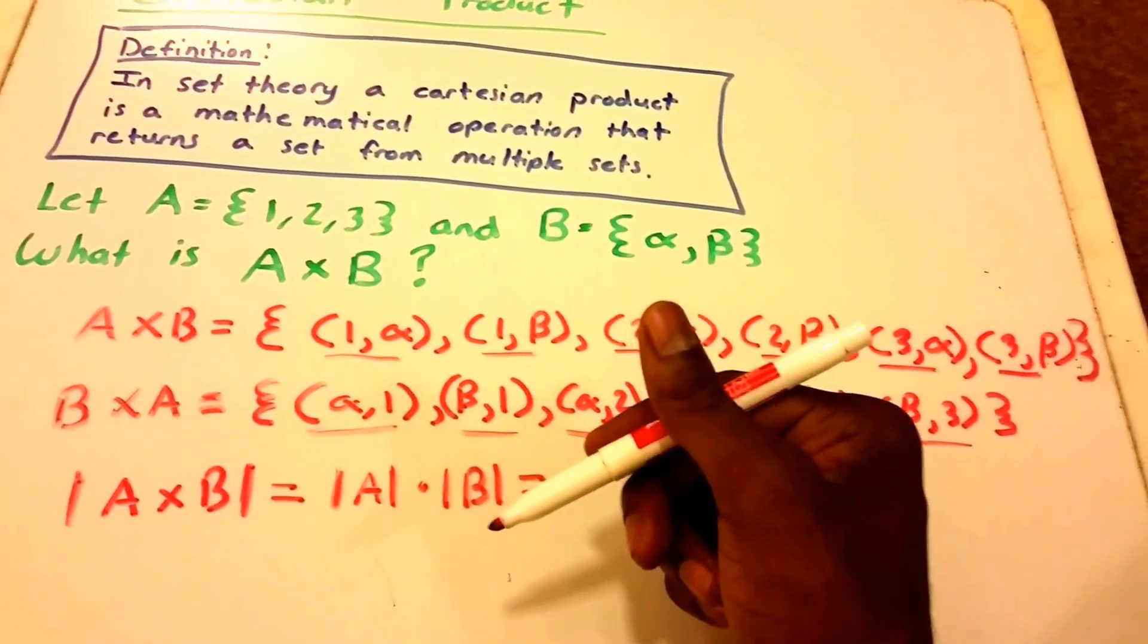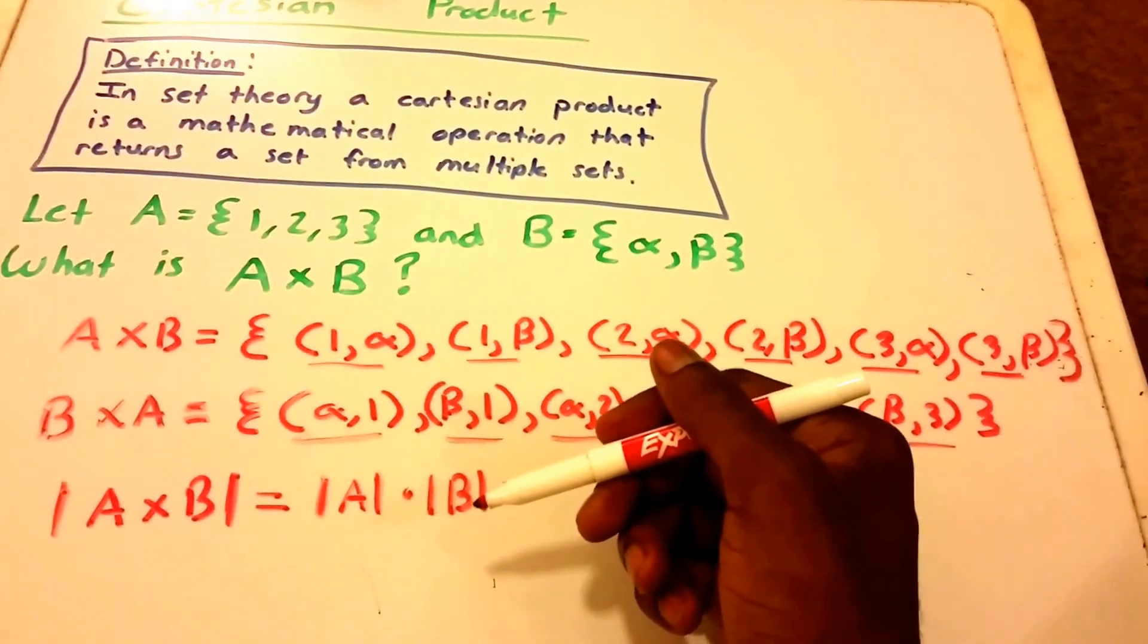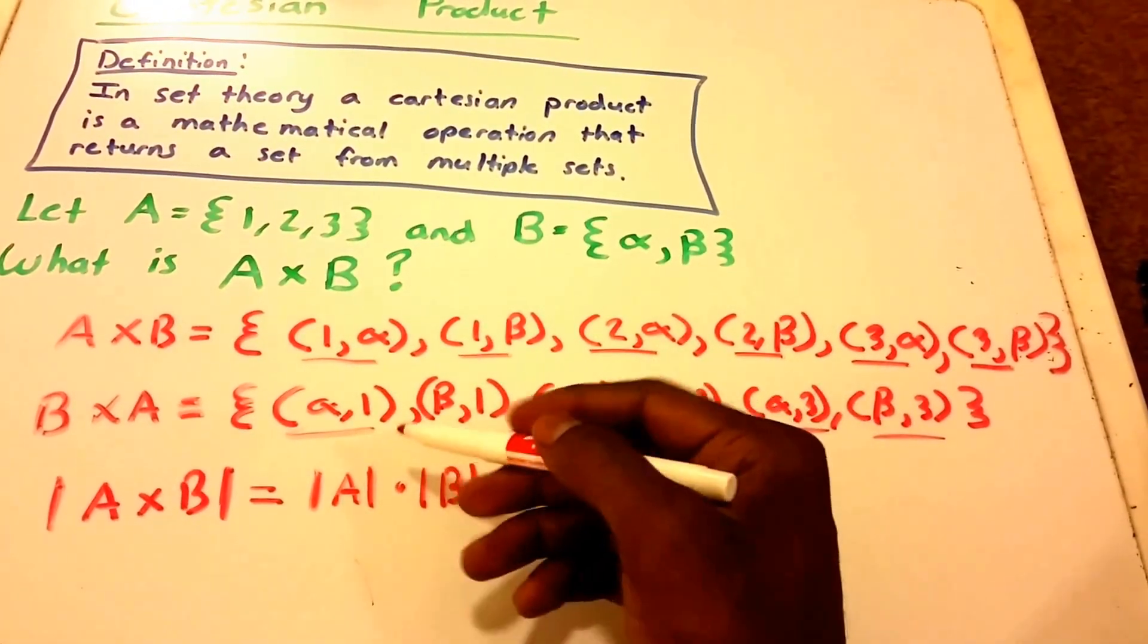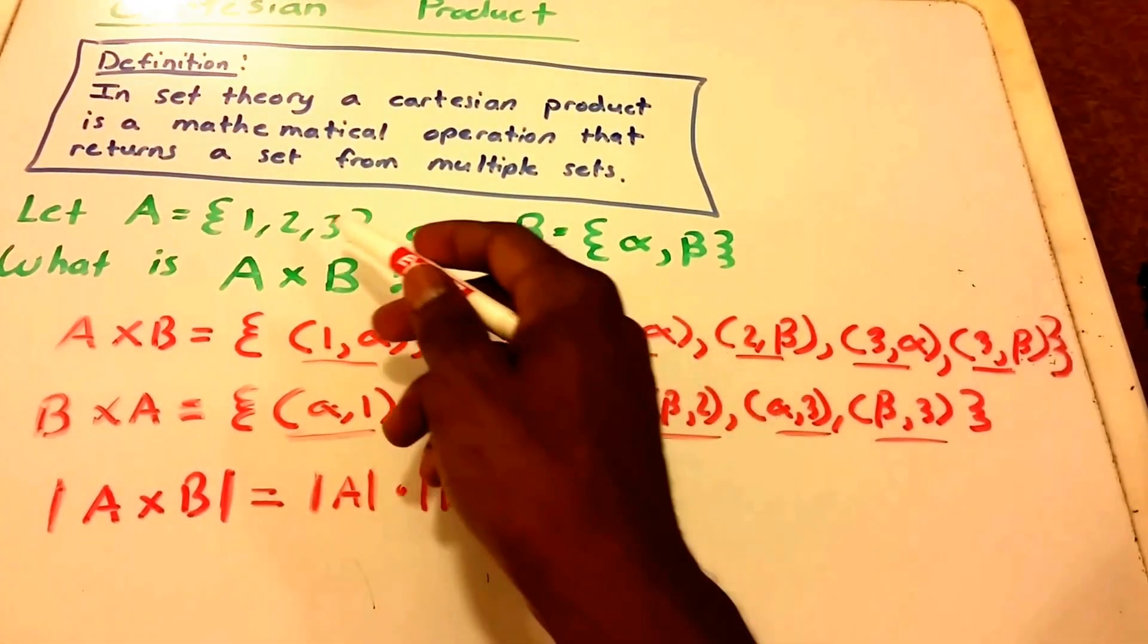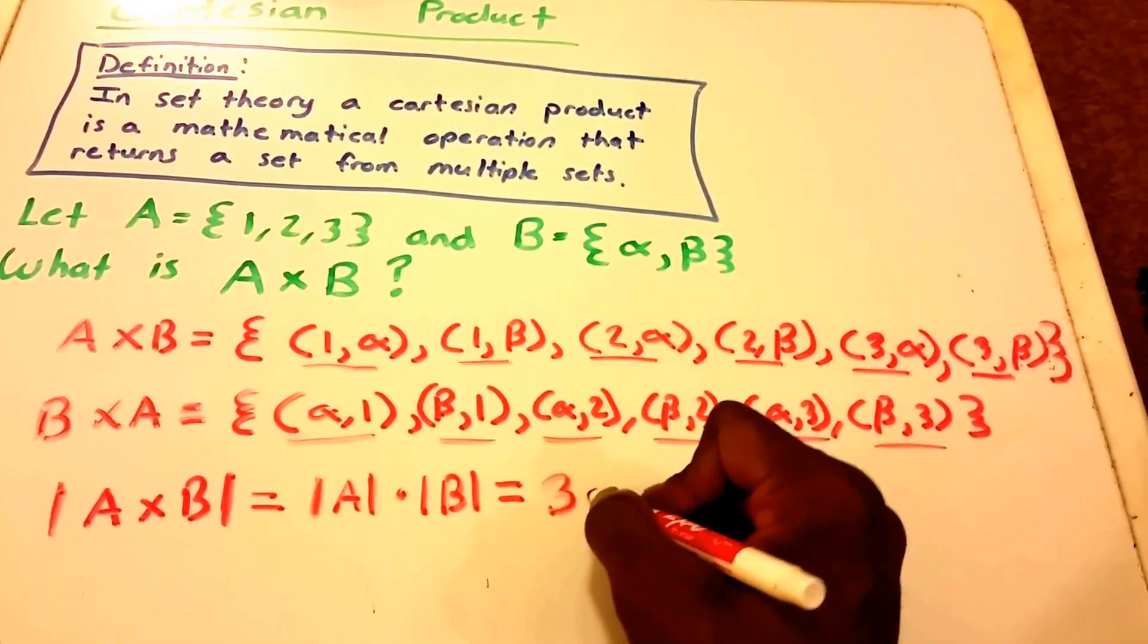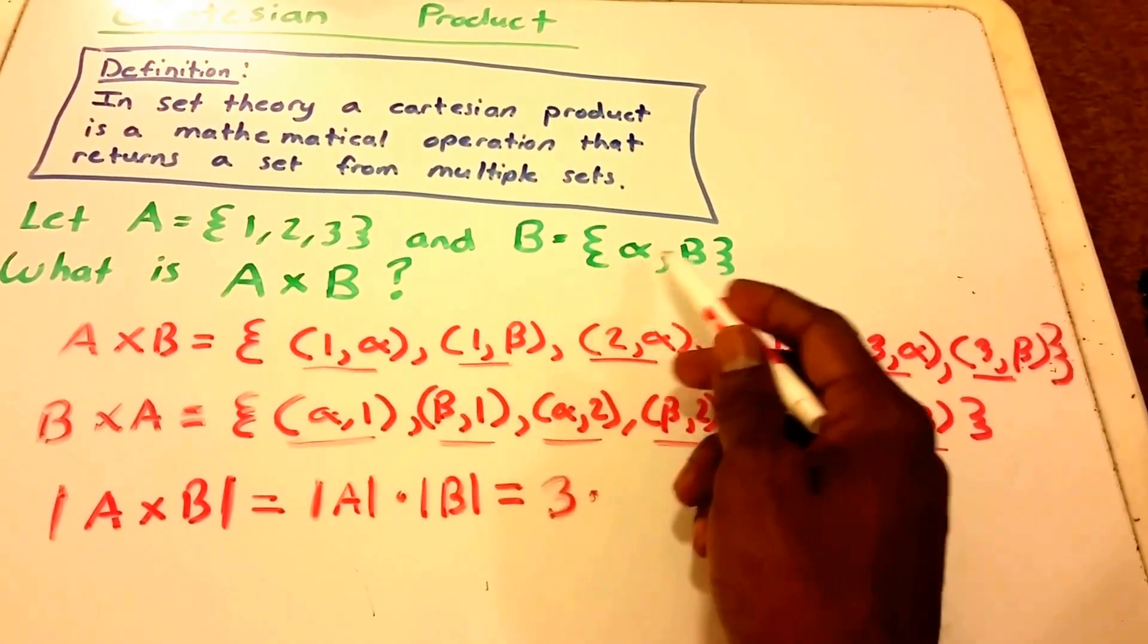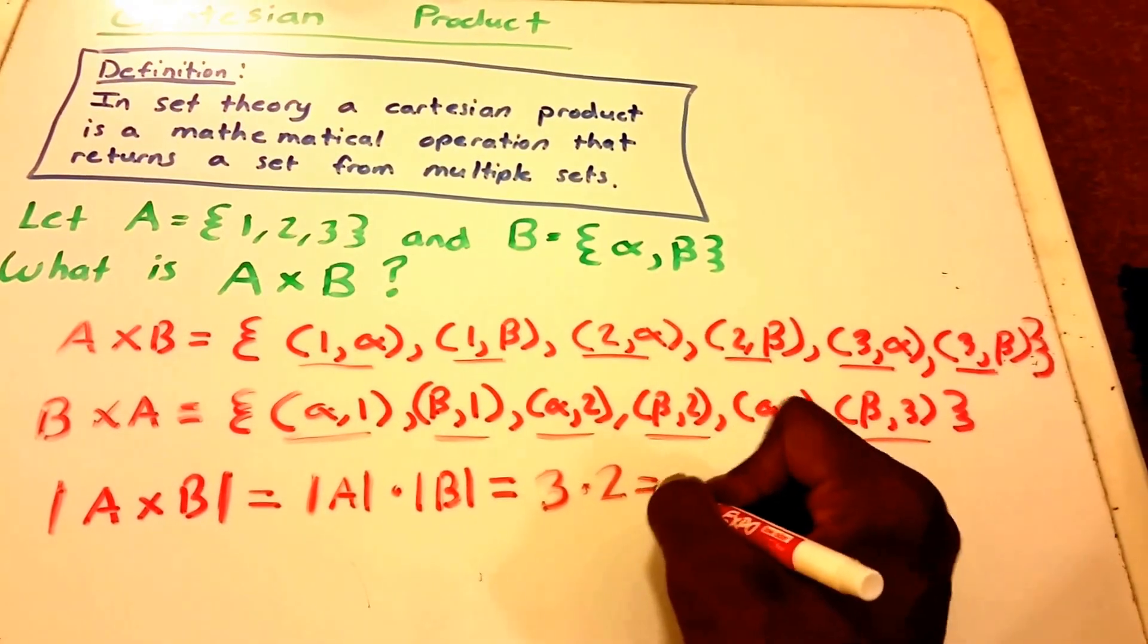And now, for those of you who don't know, the cardinality of a set is just a measure of the number of elements of a set. So this would be 3 for A because we have 1, 2, 3 elements. So we get 3 times 2, because we have 2 elements in the set B. And we get 6.